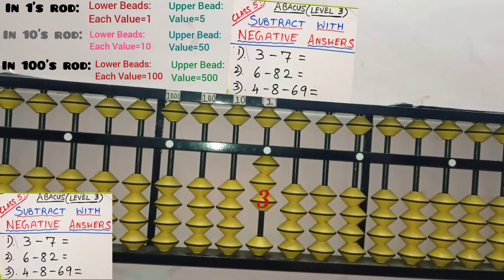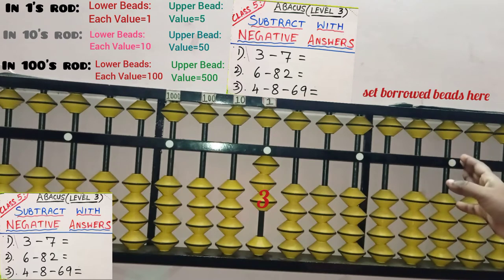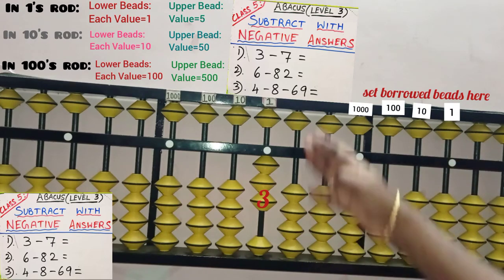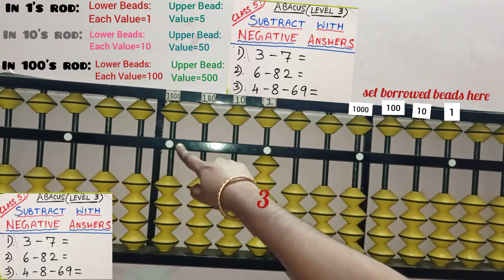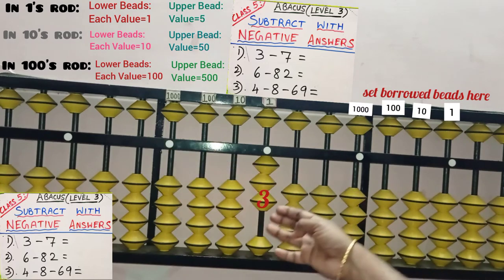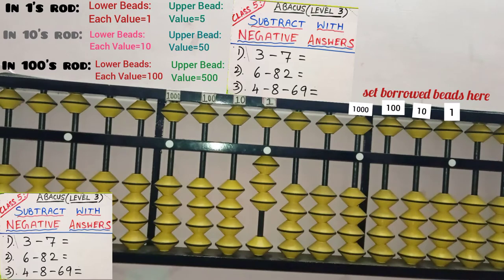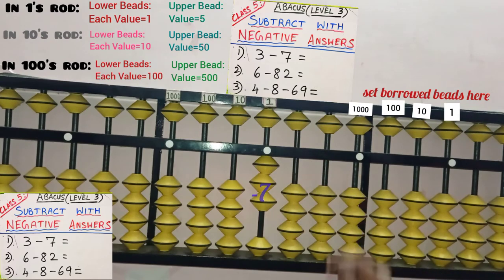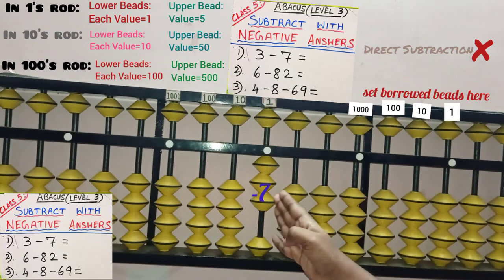3 is added. The right side of this rod will be used for setting the borrowing beads. This is 1's rod, 10's rod, 100's, 1000's, 10,000's. And in the answer set, this is 1's rod, 10's rod, 100's, 1000's. So 3 is added in 1's rod. Next, second row: minus 7 means we need to remove 7 beads from the 1's rod because 7 is in 1's place. Now check whether 7 beads are available to remove — only 3 beads are available. Hence, direct subtraction is not possible here.